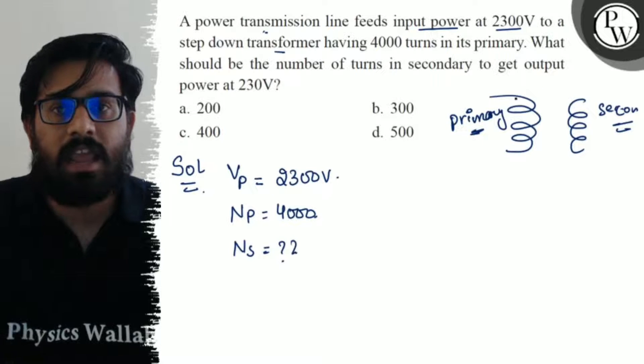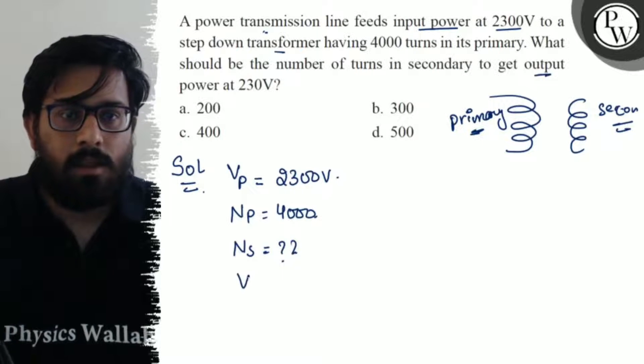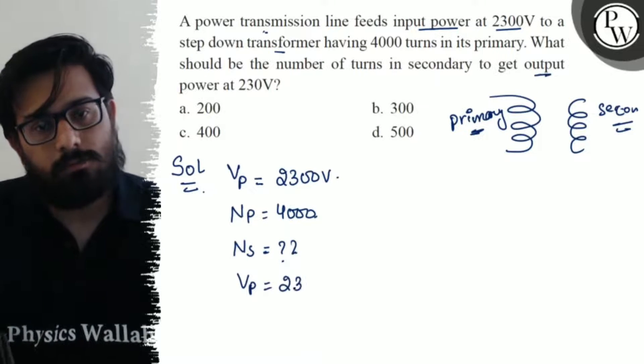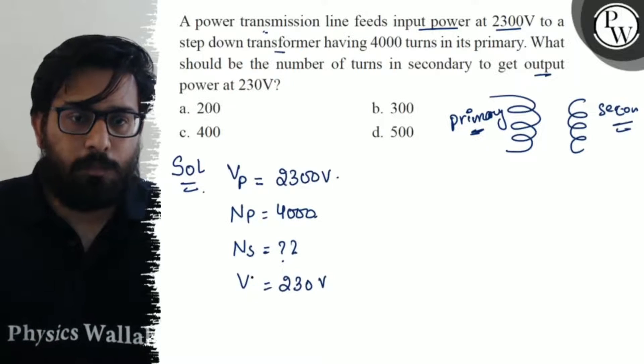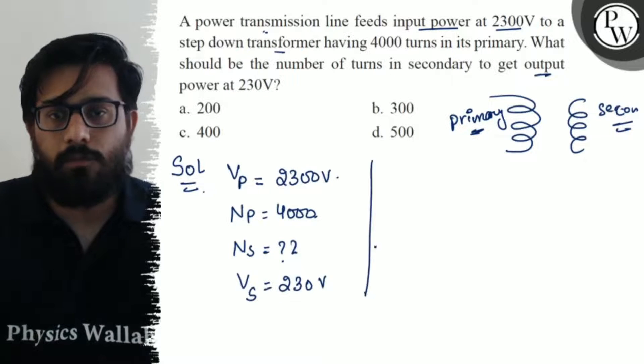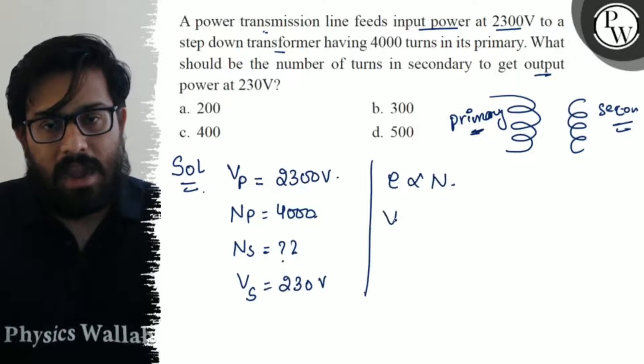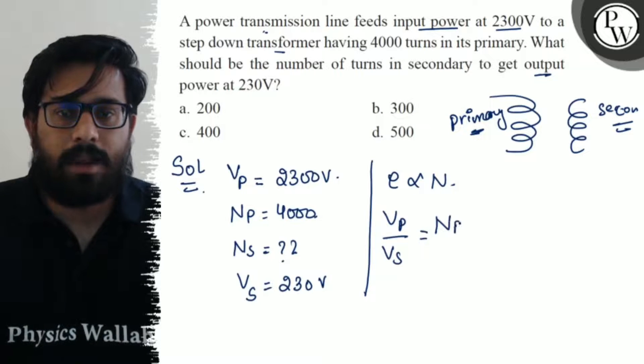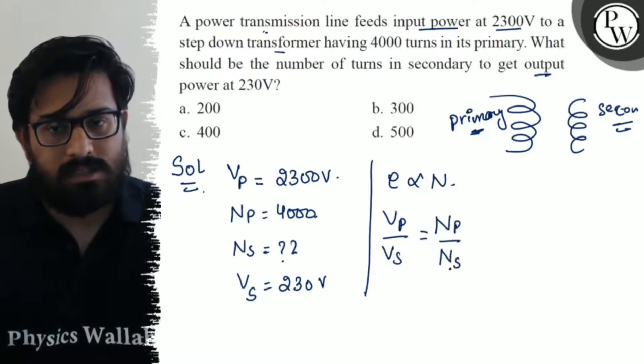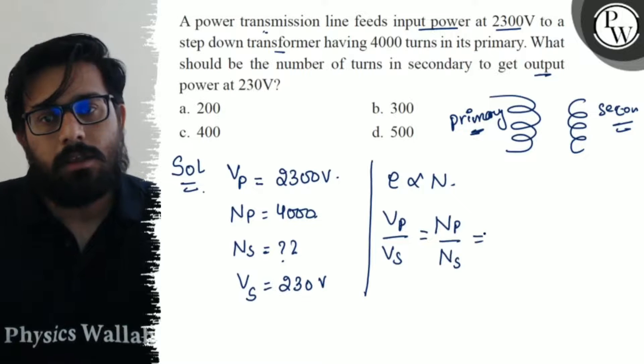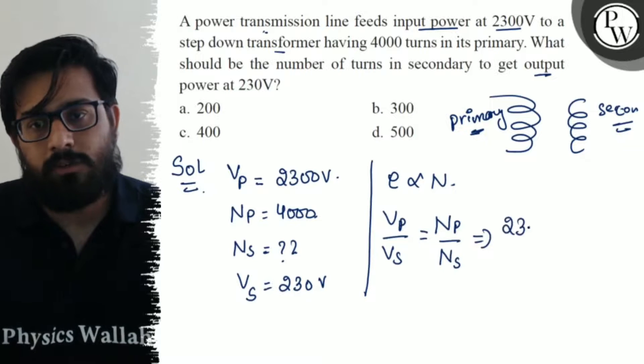I have to use the relationship: voltage in the primary upon voltage in the secondary equals number of turns in the primary upon number of turns in the secondary. So Vp/Vs = Np/Ns.